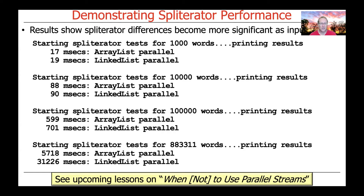With 100,000 words, ArrayList starts pulling ahead — around 600 milliseconds versus about 700 milliseconds for LinkedList. The final test uses all the words in Shakespeare, which turns out to be 883,311 words. At that scale, ArrayList is way faster than LinkedList because the input has gotten substantially bigger. When you have large amounts of data and collections that don't split evenly and efficiently, parallel streams are less of a win.